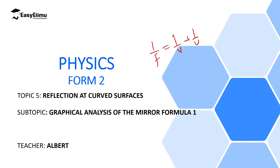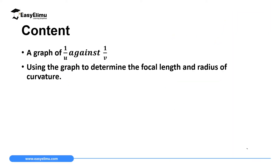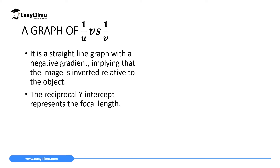In this lesson we are going to use a graphical method to determine the position of the image, the position of the object, and the focal length of the mirror. My name is Albert. By the end of this lesson, I expect you to be able to draw and analyze a graph of the reciprocal of the object distance against the reciprocal of the image distance — that is, 1 over u against 1 over v.